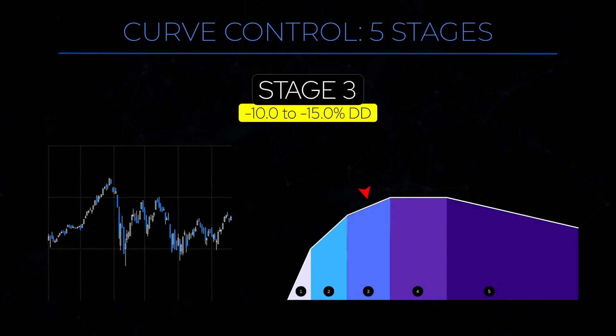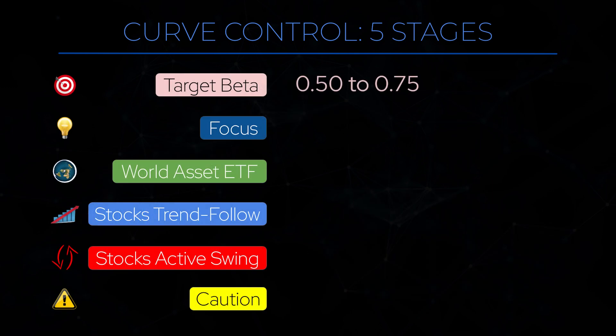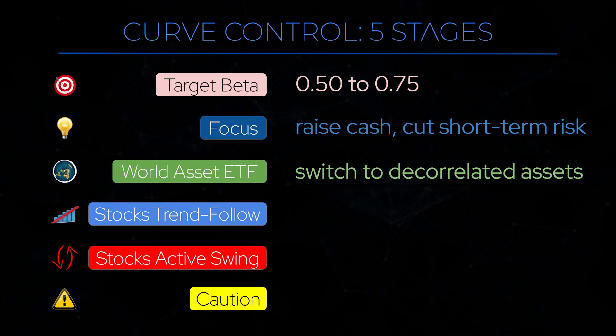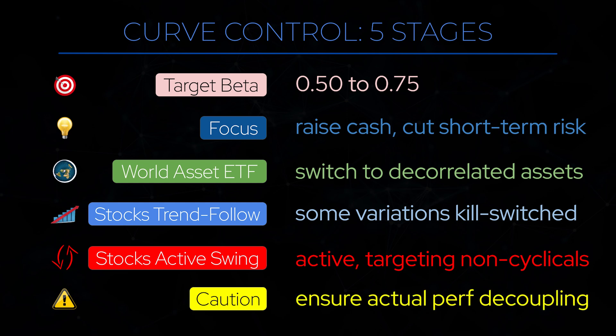Stage 3 is when the trend starts dislocating, meaning the drawdown goes between minus 10 and minus 15%. This is the first stage where the market is trying to decide between bullish and bearish dynamics, and your portfolio beta should start coming down to between 0.5 and 0.75, with cash levels rising to around 25%. The rotational ETF system will start looking for decorrelated alternatives to directional equity ETFs, whether in sectors, geographic regions, commodities, corporate bonds, or treasuries. The trend-following stock strategy will progressively unravel, with kill switches of some parametric variations tripping and liquidating entire system variations, and the short-term swing system will still fare well harnessing volatility with a VIX between 20 and 40.